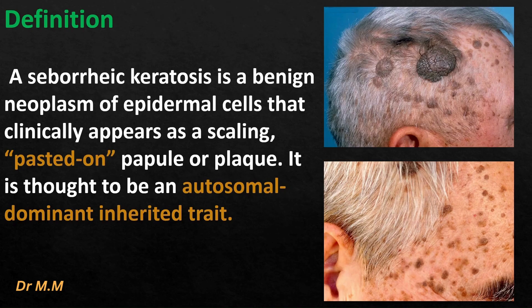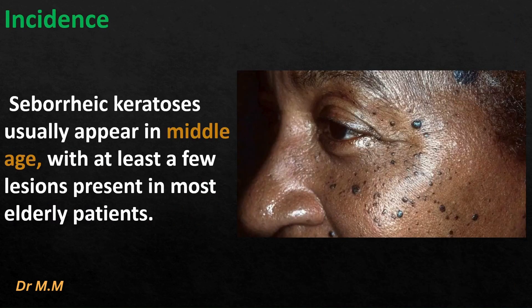pasted-on papule or plaque. It is thought to be an autosomal dominant inherited trait. Incidence: seborrheic keratosis usually appears in middle age, with at least a few lesions present in most elderly patients.